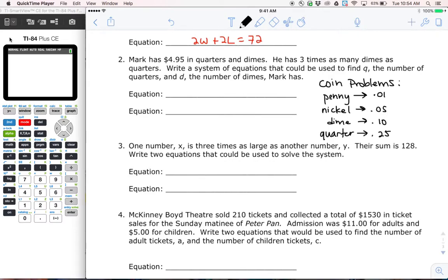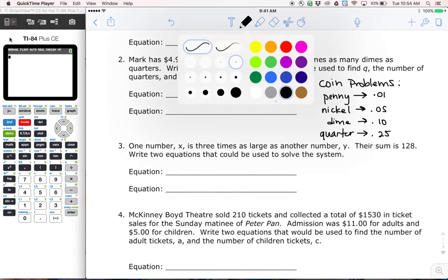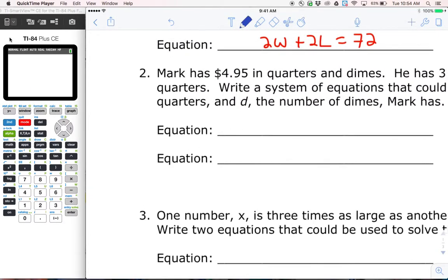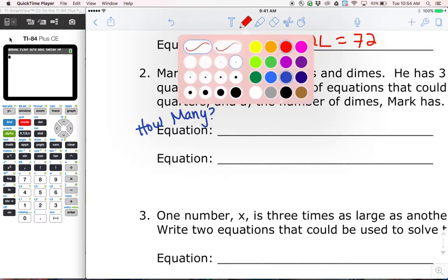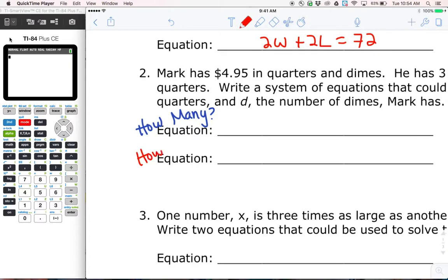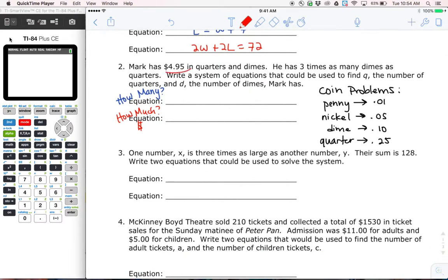And here's how you're going to do it. If you ever have a problem dealing with money and you're not sure how to set it up, ask yourself two questions. Ask yourself the two questions: How many? And then also, how much? How many and how much? And the how much question is always dealing with money. And this will help you set it up, right? How much money? Okay. So I know that on the bottom, I'm going to have this being equal to 4.95.